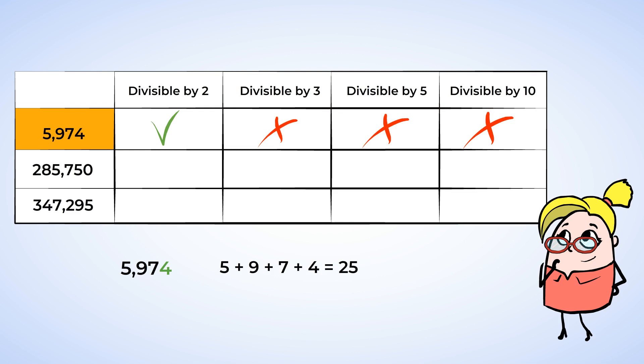Moving on to 285,750. The last number is 0. This makes it divisible by 2, 5, and 10. Great work. Time to check divisibility by 3, though. Addition time! When we add the digits together, we get 27. 27 is a multiple of 3, since 3 times 9 is 27. So yes, 285,750 is divisible by 3.